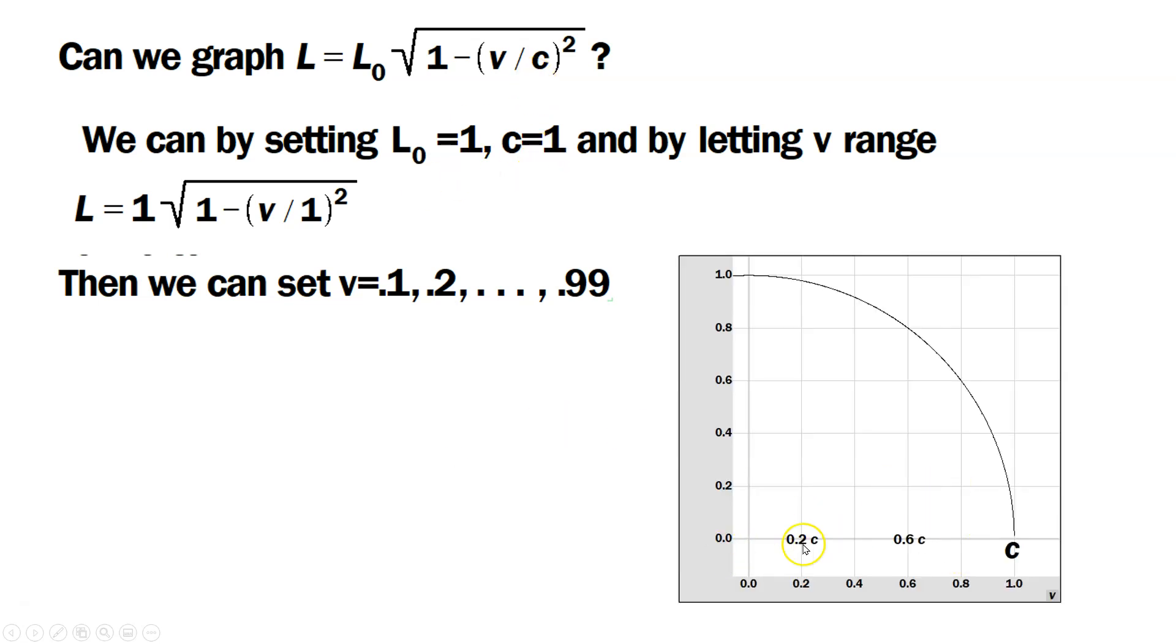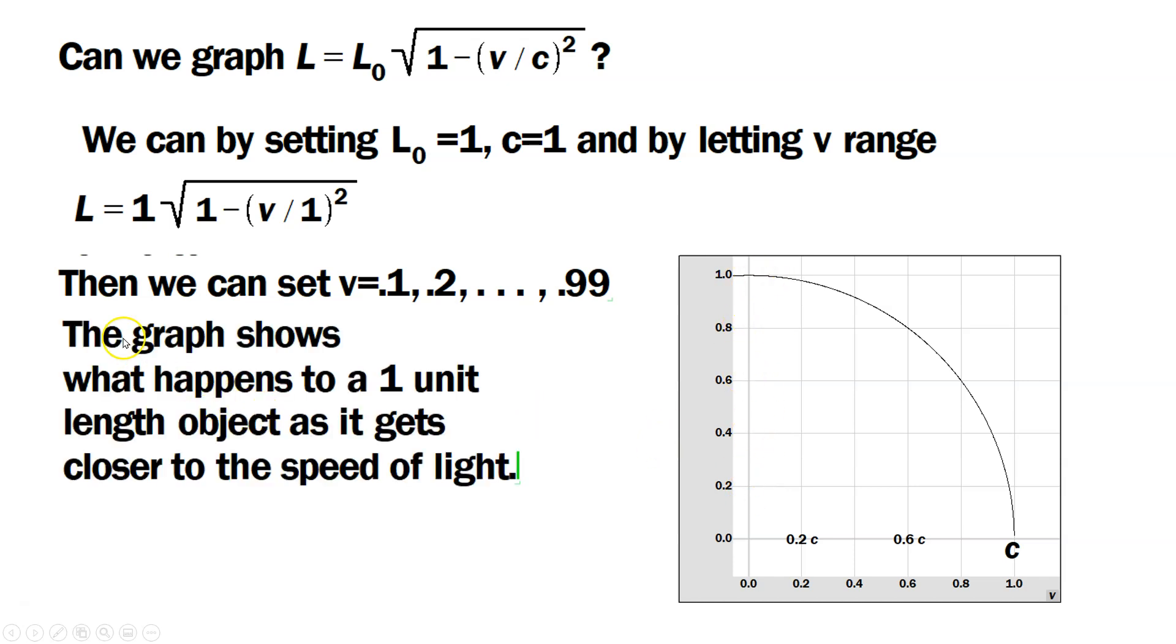Now look at the graph. On the horizontal you have c at 1, so 0.2 means 0.2 times c, 20% of the speed of light. 0.6 means 60% of the speed of light. What's output on the vertical is the contraction. The graph shows what happens to a 1 unit length object as it gets closer to the speed of light.